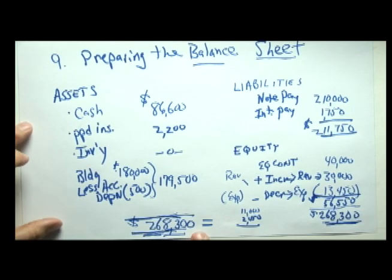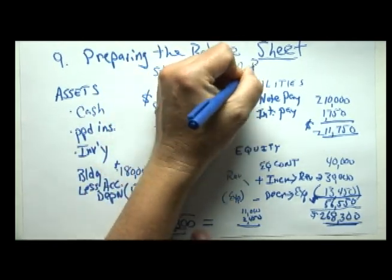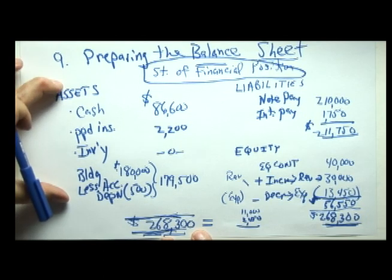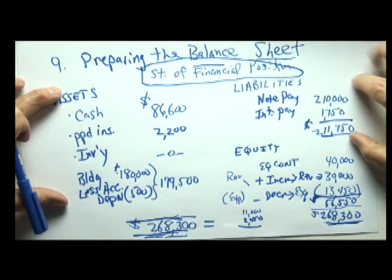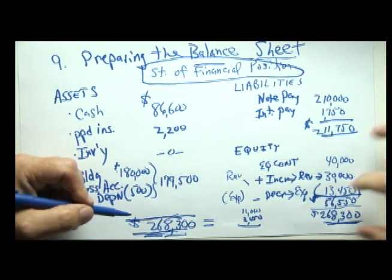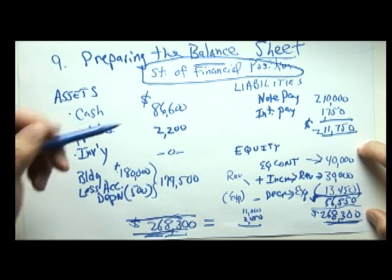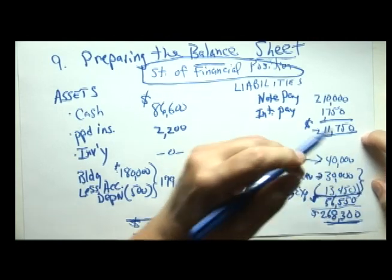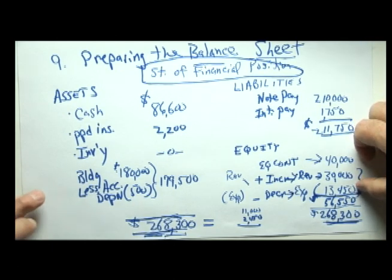To summarize: a business must prepare a balance sheet, also known as the statement of financial position. It summarizes the economic resources of the business on the left and shows where those assets came from. The banker financed two hundred eleven thousand of the two hundred sixty-eight thousand in assets; the rest was financed by the owner's contribution plus earnings. Increases in equity are revenues; reductions from operations are expenses. Revenues minus expenses will become the basis for our second financial statement in video ten — the income statement.